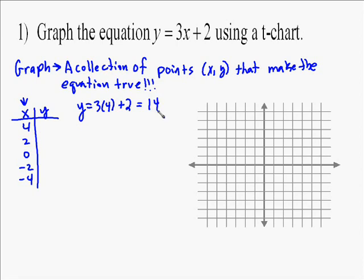So for instance, this first one, when I plug in 4 for x, I've got to find out what y is. Well, y equals 3 times 4 plus 2. 3 times 4 is 12. 12 plus 2 is 14. So my first point is 4, 14. Well, 14 isn't going to fit on my graph, so I'm going to end up ignoring that one.